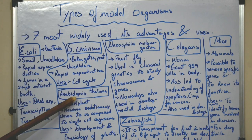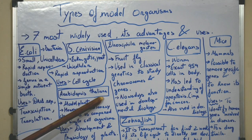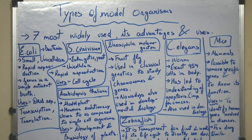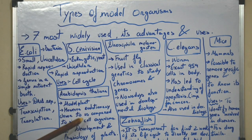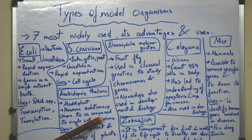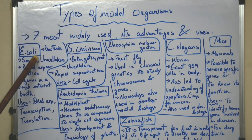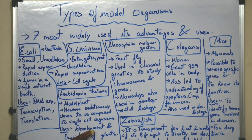The third model organism which is commonly used is Arabidopsis thaliana. Arabidopsis thaliana is a small weed plant which is used as a model plant. Although it is a plant, it is evolutionarily closer to humans compared to both these single-cell organisms. It is mainly used to study the development and physiology of plants.